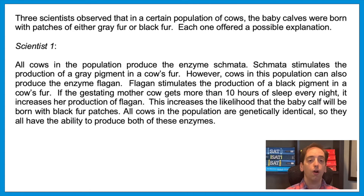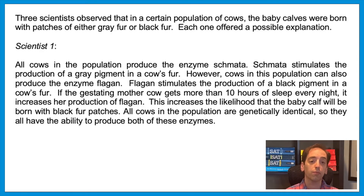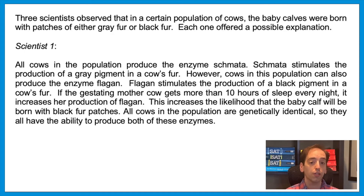Scientist 1. All cows in the population produce the enzyme schmata. Schmata stimulates the production of a gray pigment in a cow's fur. However, cows in this population can also produce the enzyme phlegon. Phlegon stimulates the production of a black pigment in the cow's fur. If the gestating mother cow gets more than 10 hours of sleep every night, it increases her production of phlegon, increasing the likelihood that the baby calf will be born with black fur patches. All cows in the population are genetically identical, so they all have the ability to produce both of these enzymes.